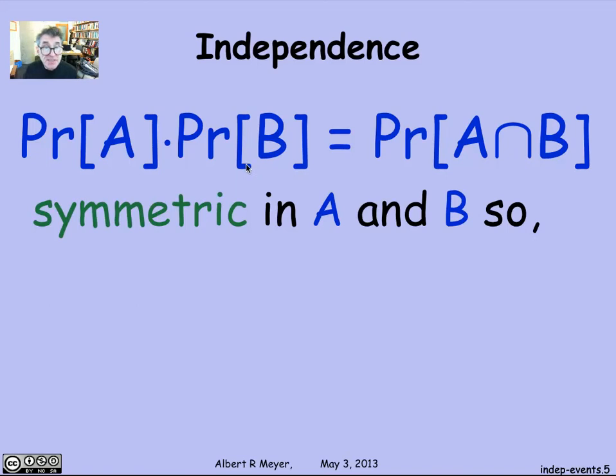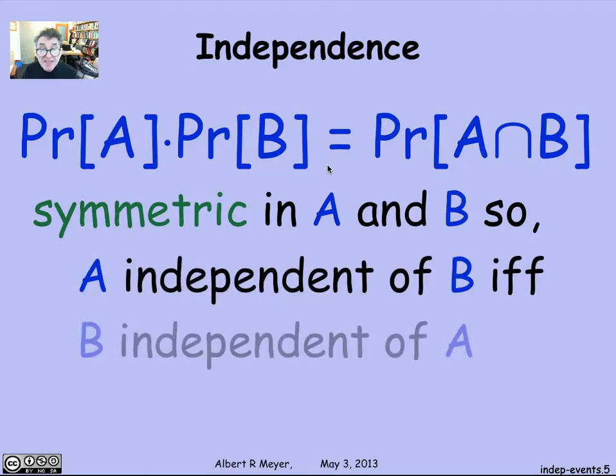Looking at this definition, what you can see immediately is that it's completely symmetric in A and B. Since multiplication is commutative and intersection is commutative, which is A and which is B doesn't matter. And what that implies then is that A is independent of B if and only if B is independent of A.